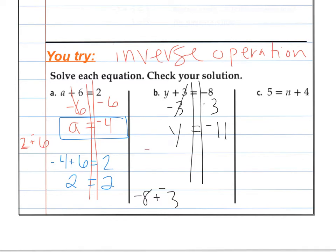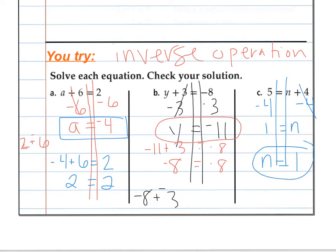Check my solution. Negative 11 plus 3 is equal to negative 8. More negatives than positives. 11 minus 3. So since they match, my solution works. I'm adding 4, so I'm going to subtract 4 on both sides. Bring down my n. 5 minus 4 is 1. I'm going to want to rewrite this variable first. n is equal to 1. Plug it back in and check.